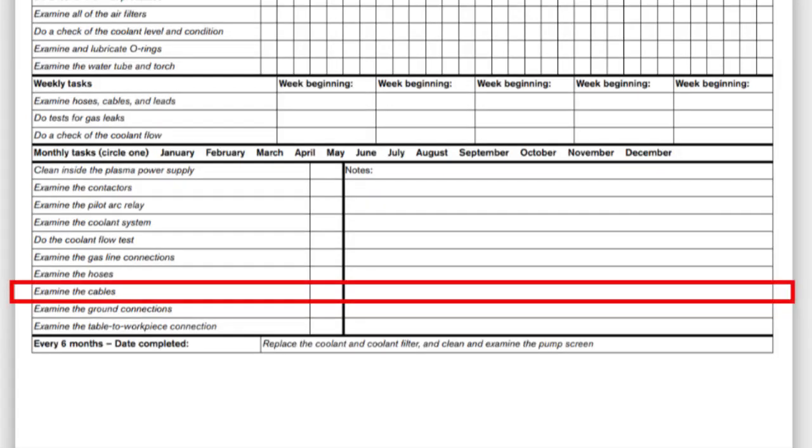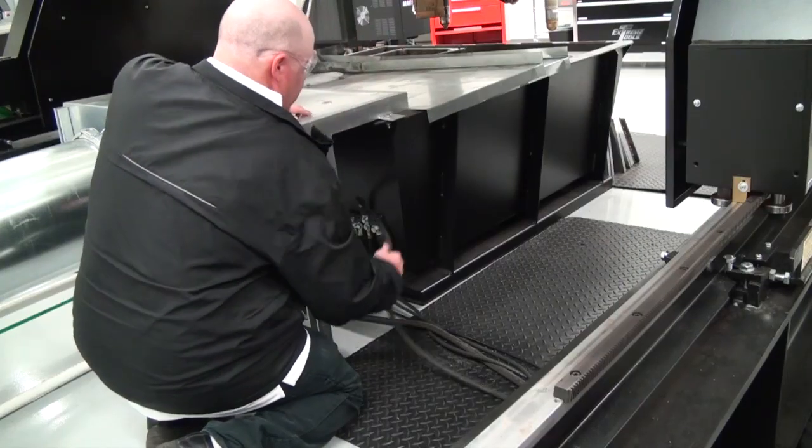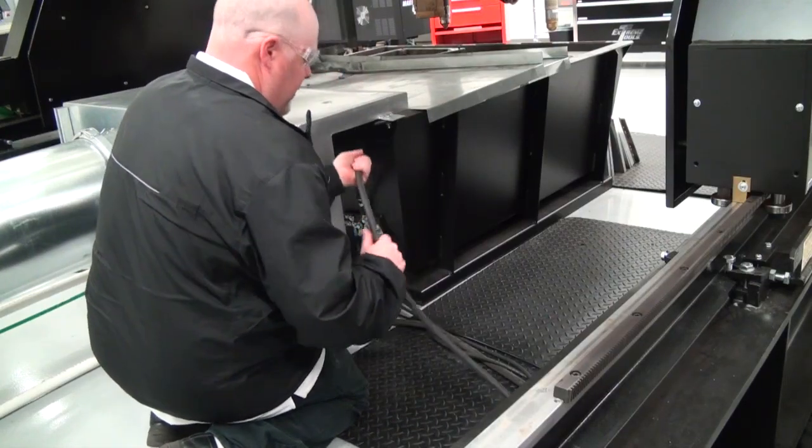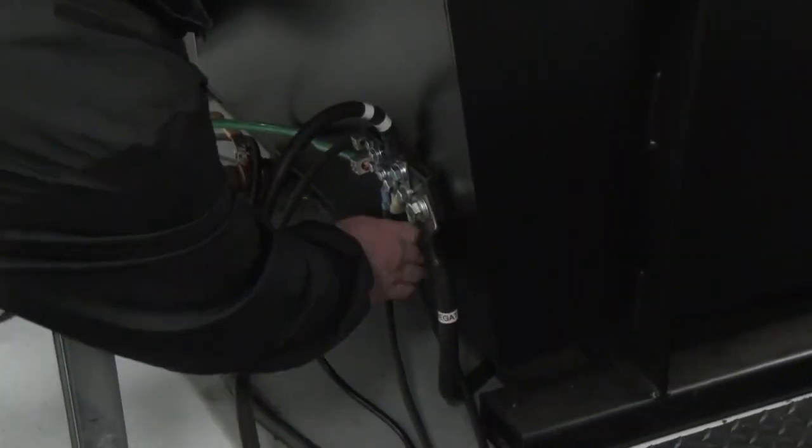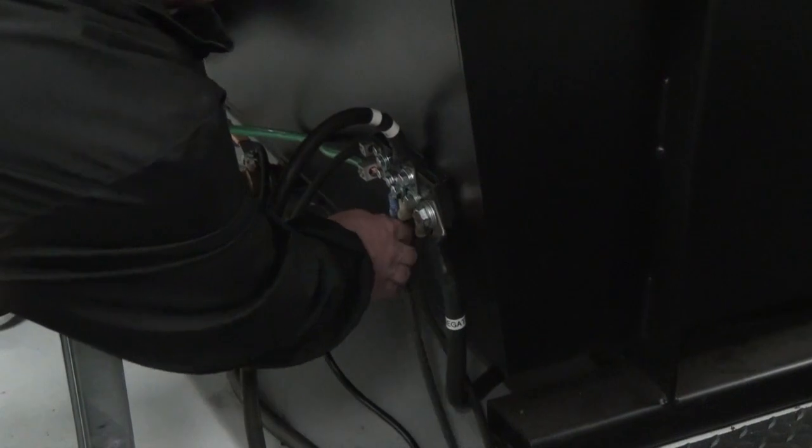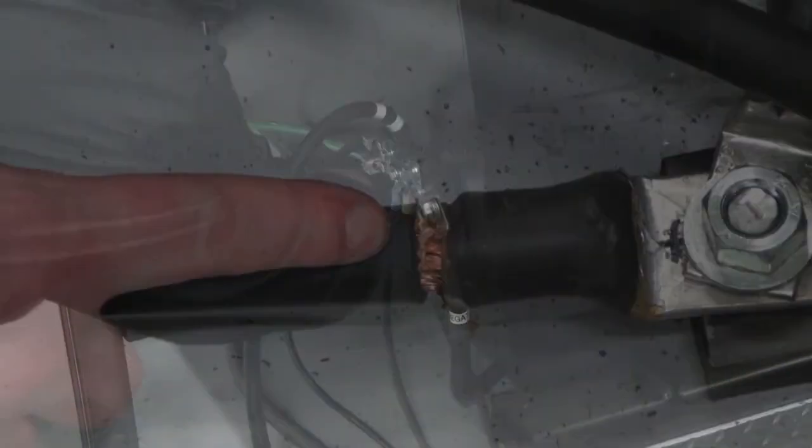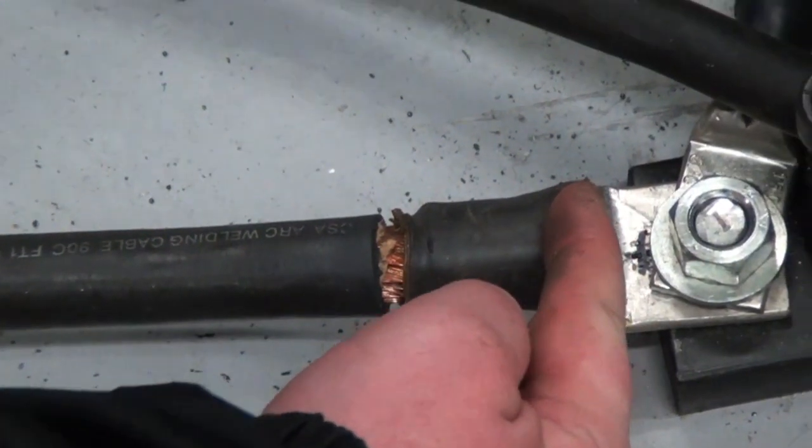Next, examine the cables. Examine all the cables for cracks or unusual wear. If the outside insulation is cut, melted, crushed, or any other damage is found, replace the cable. Check the connections. They should be secure with no signs of physical damage.